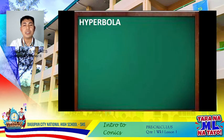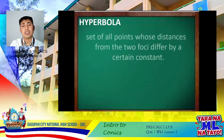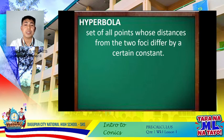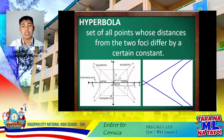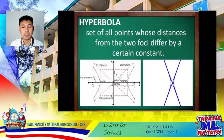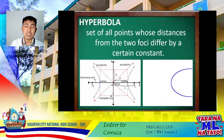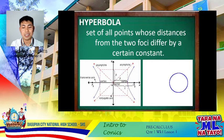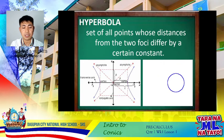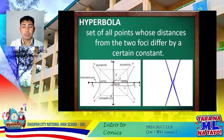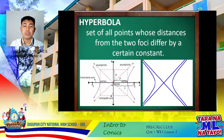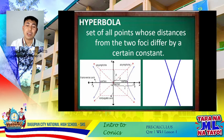A hyperbola is the set of all points whose distances from two foci differ by a certain constant. If an ellipse contains two parabolas facing each other, we could note that a hyperbola contains two parabolas facing opposite each other. The major axis or transverse axis is the location of the foci and vertices. The minor axis or conjugate axis, and the term asymptote, will be further discussed in succeeding lessons.